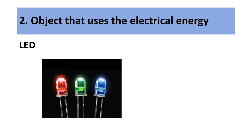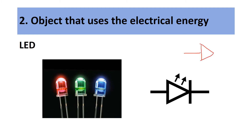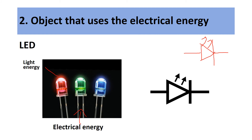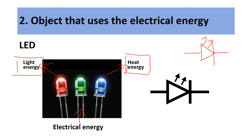Our next object is an LED light bulb. The symbol is a triangle with a wire connecting on one side, a line, another line for the wire, and two arrows coming off the triangle. When turned on, electrical energy flows in and is transformed into light energy and heat energy. LEDs are said to be much more efficient than a filament light bulb because more energy is transformed into light energy and less is wasted as heat energy.